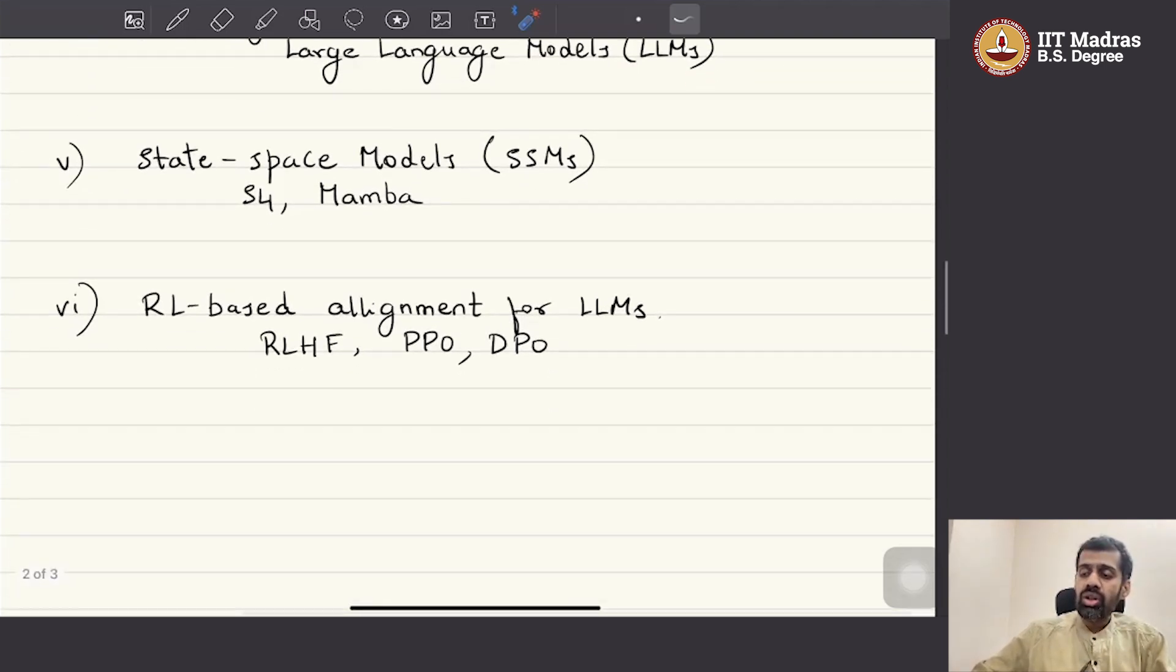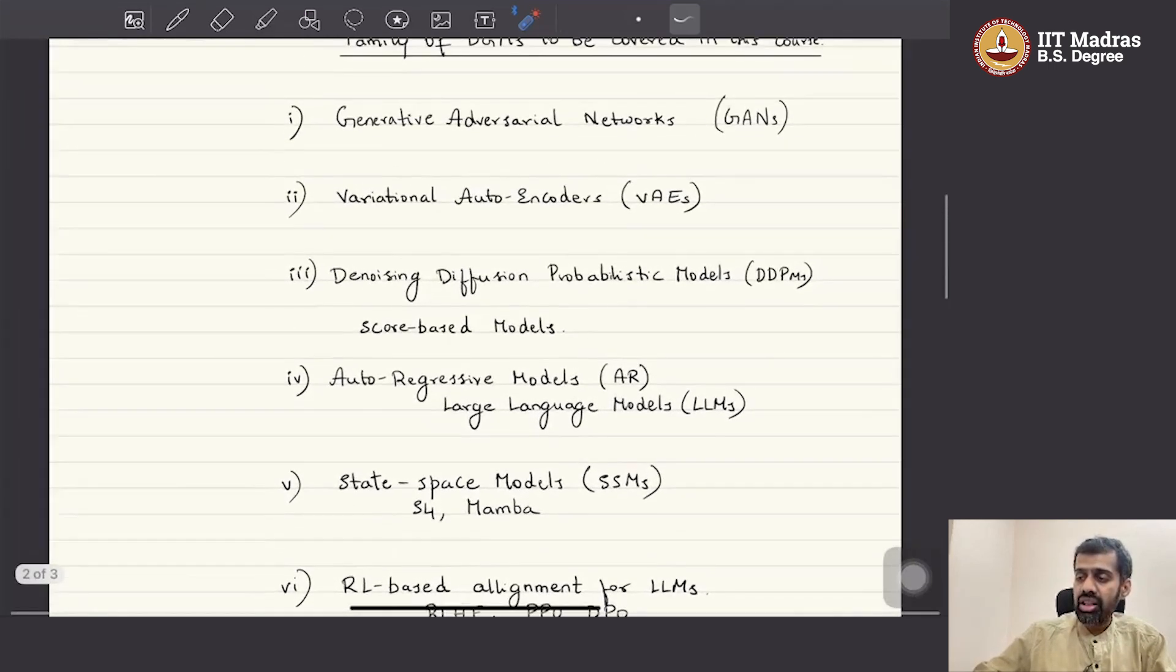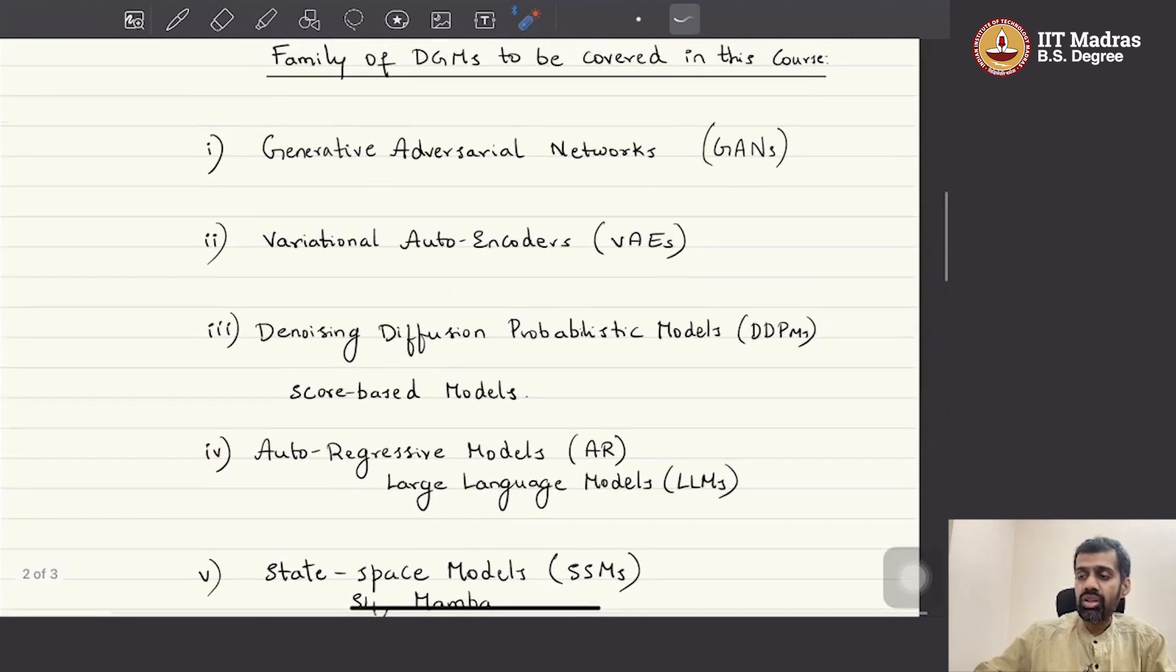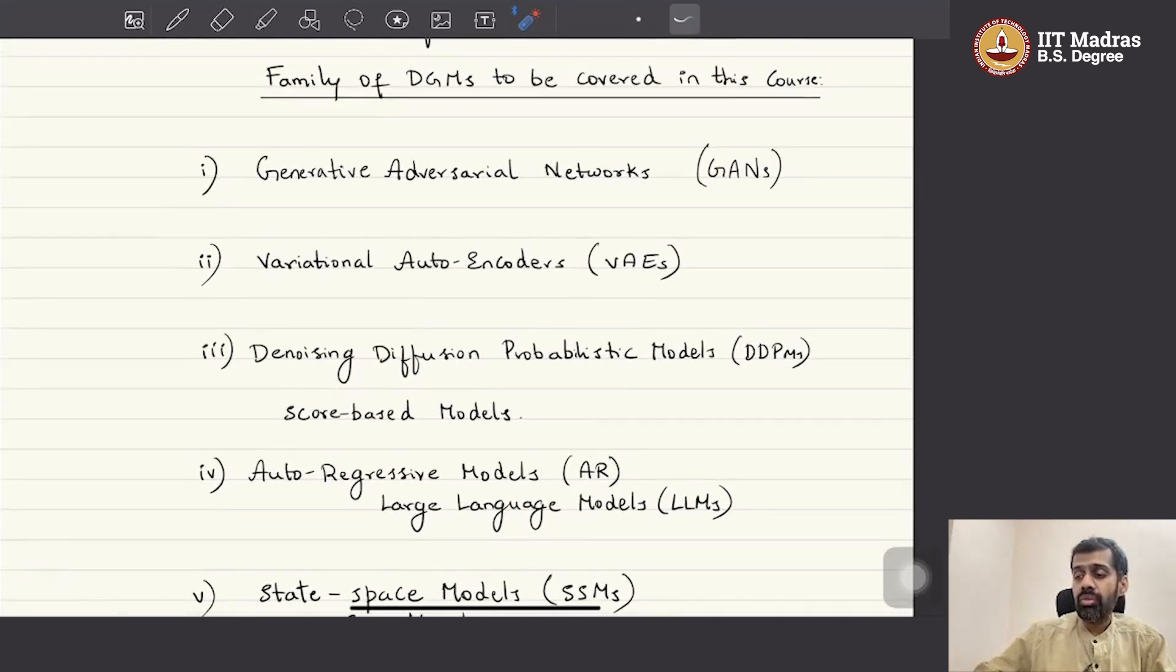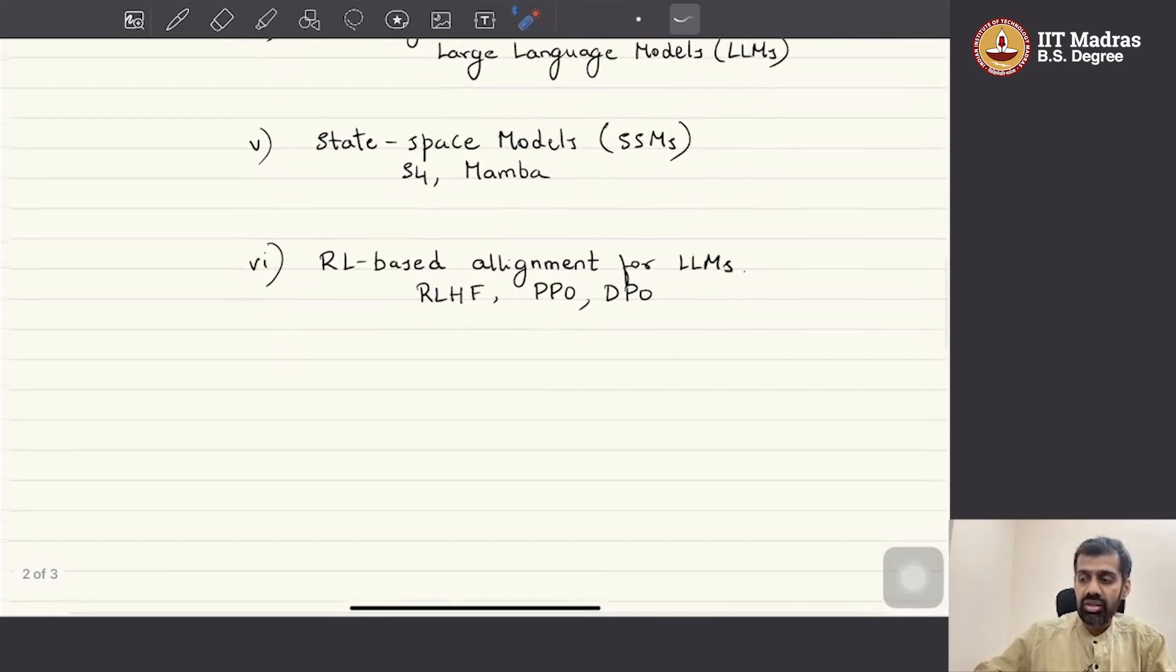Now, at the end of the course, we will also look at some of the techniques that are used for alignment of large language models. Specifically, we will be looking at reinforcement learning-based alignment techniques such as PPO which is called the Proximal Policy Optimization Algorithm and we will also look at Direct Preference Optimization, Direct Policy Preference Optimization, abbreviated as DPO. So, this is the broad content of the course that we are going to go through in this particular module.